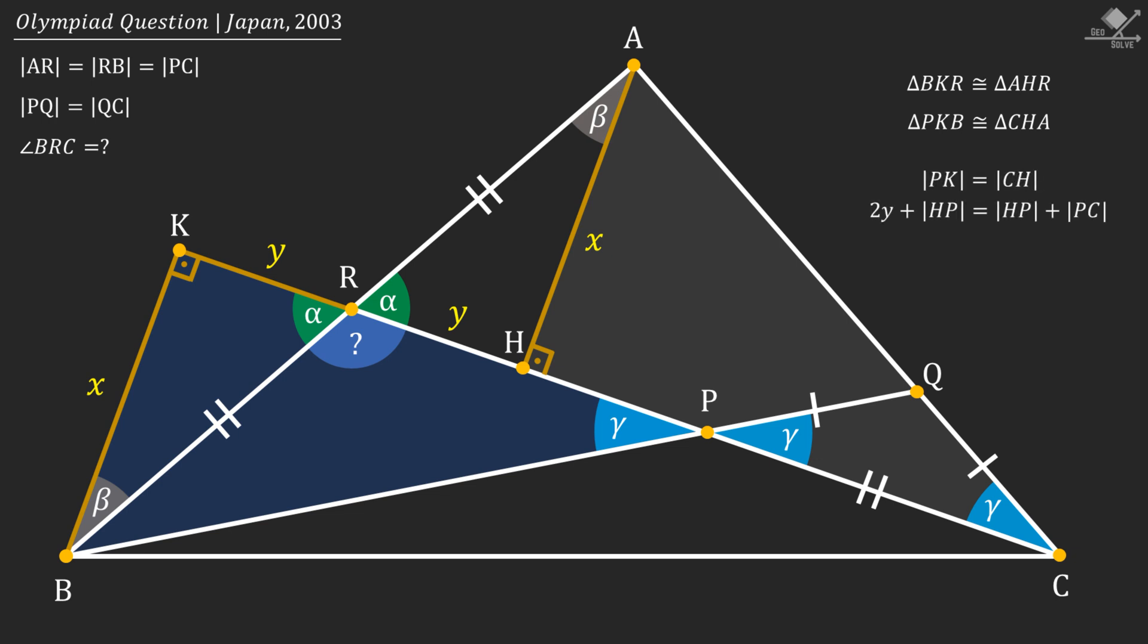And if we put the values that will be 2Y plus HP equals HP plus PC. And from here we will see that the length of the line segment PC will be equal to 2Y. Therefore the length of the line segment BR and RA will also be equal to 2Y.